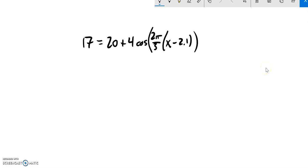So let's go ahead and solve this equation and notice that my cosine of something is kind of buried in here, so I got to do away with this adding 20 and multiplying by 4.